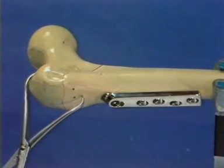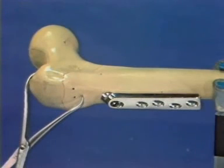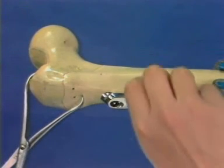At the time of hardware removal, the plate and screws are first removed, followed by the DHS leg screw.